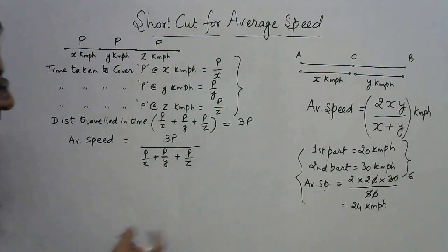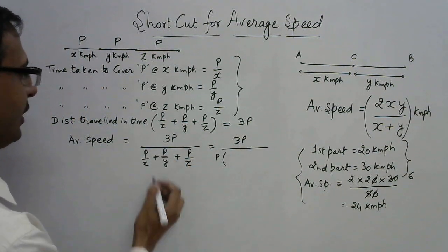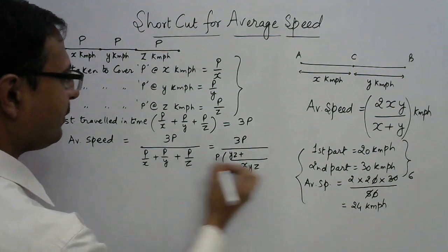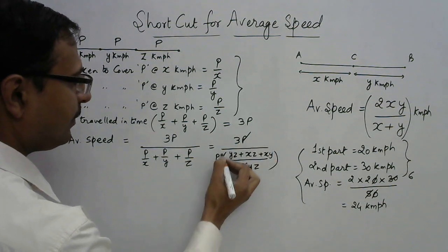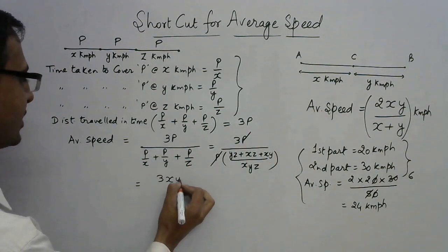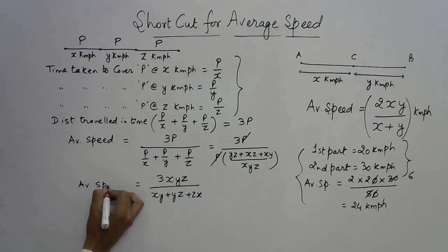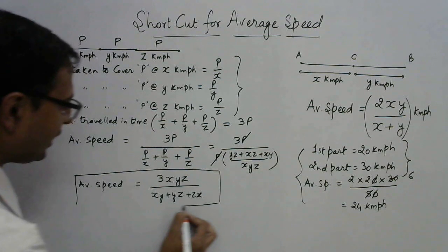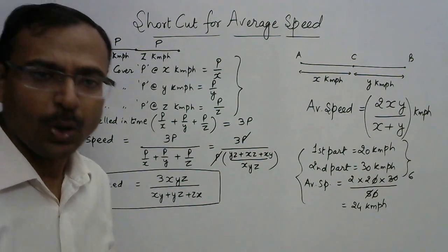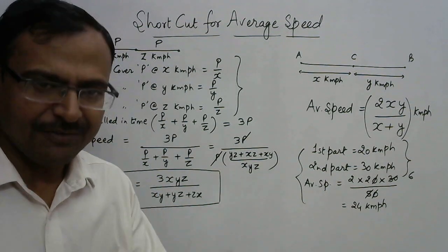If you simplify this, you get 3p upon p times (1/x + 1/y + 1/z). Taking xyz as the LCM in the denominator gives yz + xz + xy, and p cancels out, giving the average speed as 3xyz upon (xy + yz + zx). This is the direct formula for average speed for three equal distances covered with unequal speeds. Remember this formula to solve average speed problems very quickly.